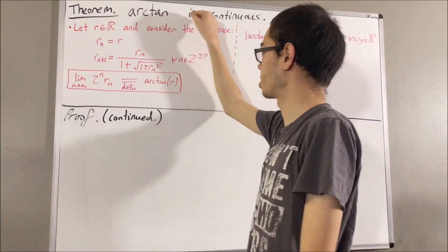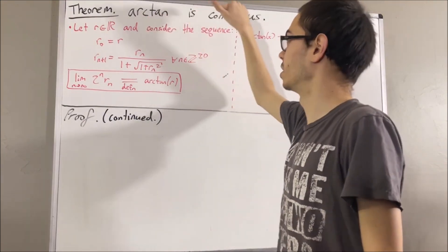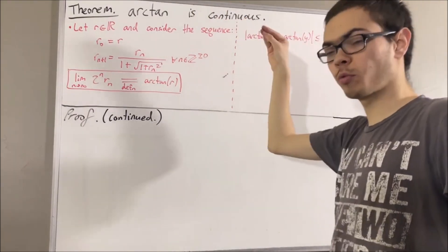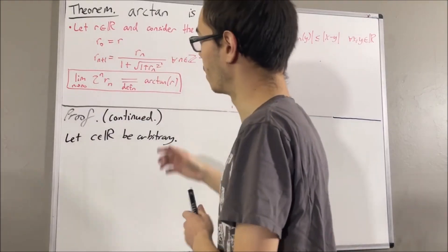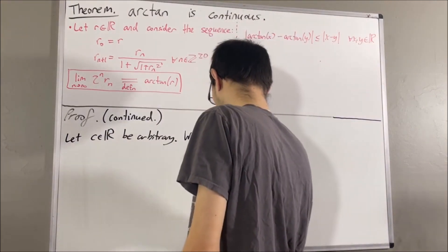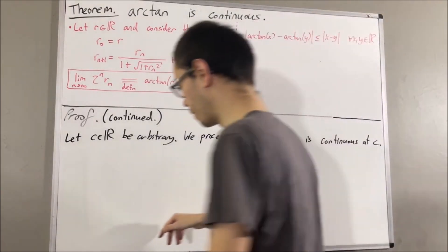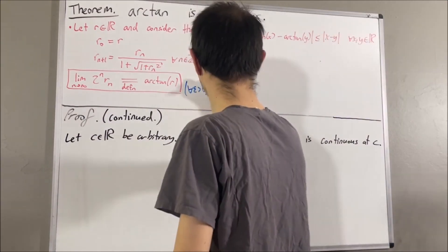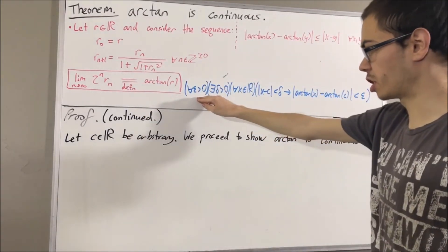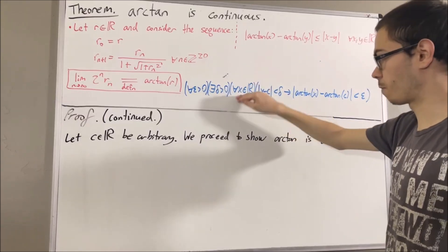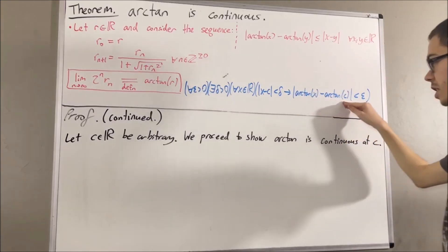Now we're going to prove that the arctangent function is continuous. To prove that, we want to prove that arctangent is continuous at every real number. So let's give ourselves an arbitrary real number c, and proceed to prove that arctangent is continuous at c. By the definition of continuity, this means: for every epsilon greater than 0, there exists a delta greater than 0 such that for all x in the real numbers, if the absolute value of x minus c is less than delta, then the absolute value of arctangent of x minus arctangent of c is less than epsilon.